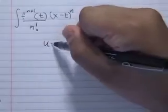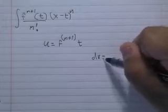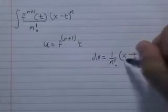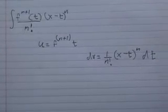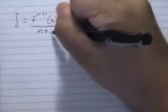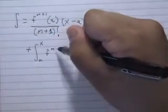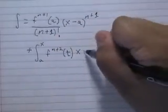The final step is to use induction to demonstrate that this equation holds for the n plus first case. That is accomplished with another iteration of the Fundamental Theorem of Calculus and integration by parts. So we can see that the integral of the n plus first derivative evaluated at t divided by n factorial times x minus t to the n is equal to the n plus first derivative of f evaluated at a divided by n plus 1 factorial times x minus a to the n plus 1, plus the integral from a to x of the n plus second derivative of f at t divided by n plus 1 factorial times x minus t to the n plus 1 dt.